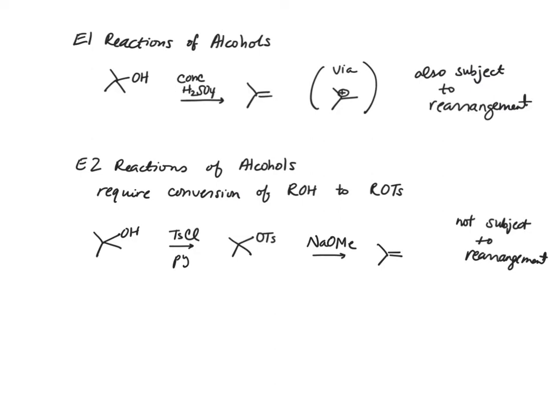Familiar to you already are E1 reactions of alcohols. Here we take an alcohol, either secondary or tertiary, and treat it with concentrated sulfuric acid to form an alkene. And keep in mind that this goes through a cationic intermediate, and this is formed after the protonation of the alcohol. So we want to protonate this alcohol first, and then have it leave as water to form our carbocation, which then undergoes elimination to produce the alkene.